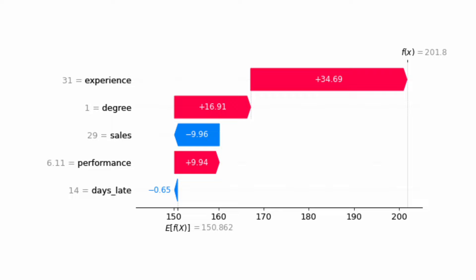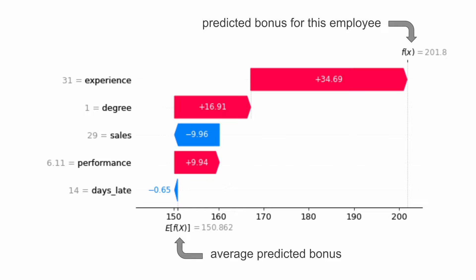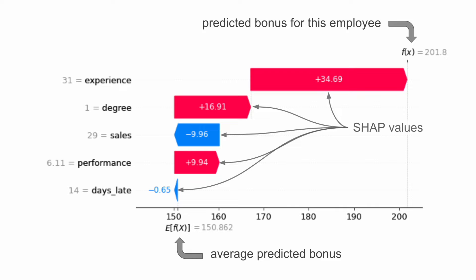This is where SHAP comes in. Here we have a SHAP waterfall plot for one of the employees. There's a lot of information here, so let's break it down. E is the average predicted bonus across all 1,000 employees in our dataset. F is the predicted bonus for this specific employee. The SHAP values are all the values in between — they tell us how each feature has contributed to the prediction when compared to the average prediction.